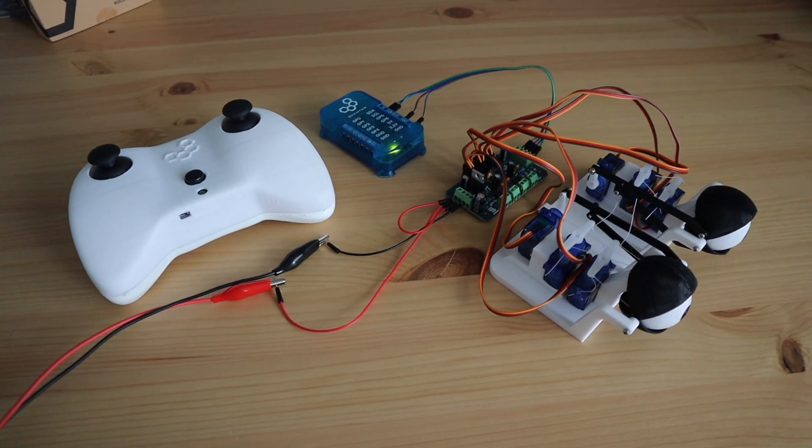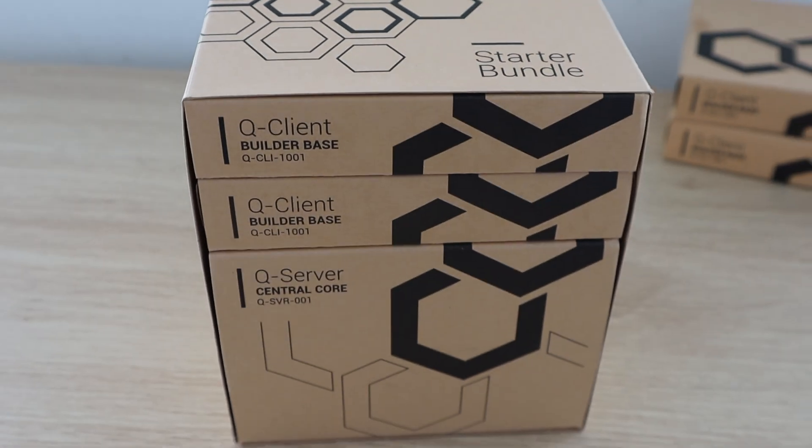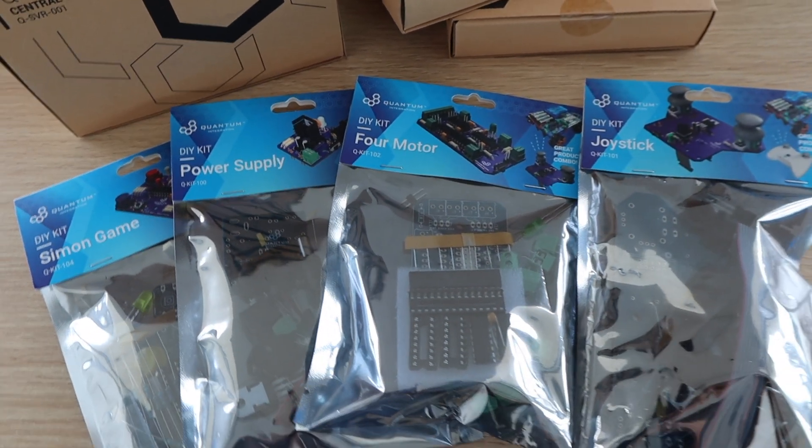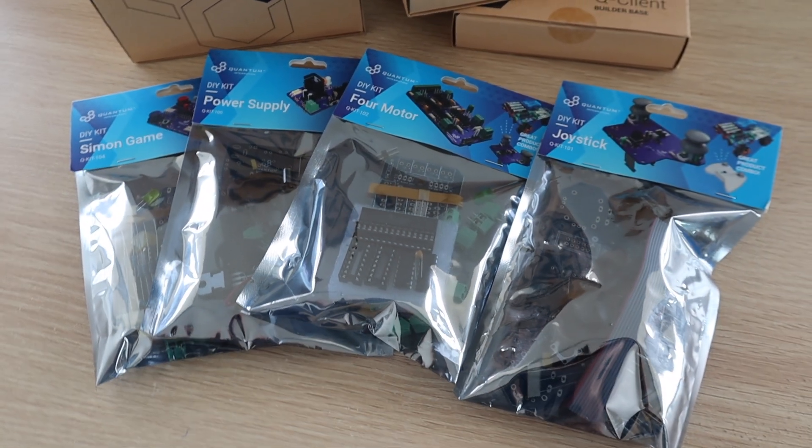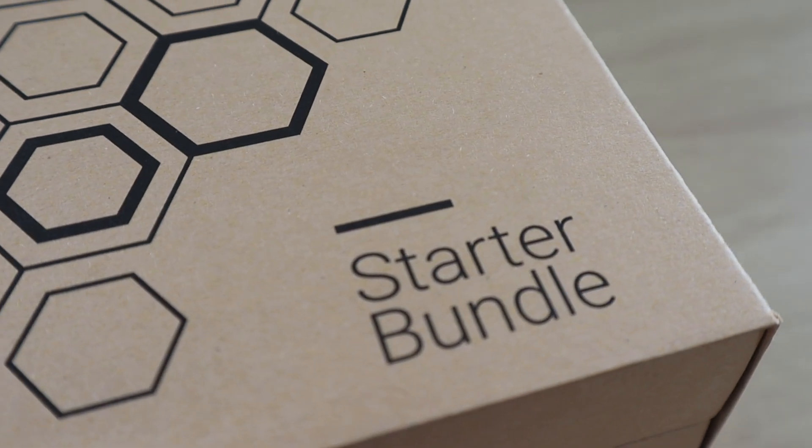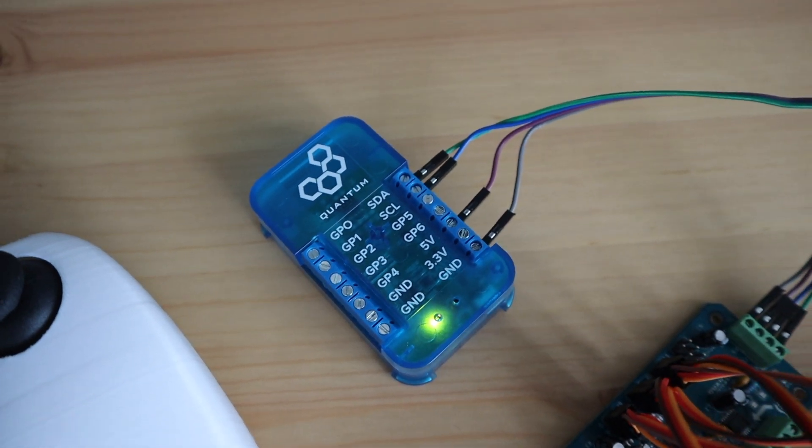So as I said at the beginning of the video, Quantum Integration are going to be giving away a starter bundle, which includes their Q server and two builder bases, as well as their four original DIY kits and a component kit. The component kit includes things like jumpers, a keypad, motion sensor, resistors and LEDs, so basically everything you need to get started building your own wireless electronics project.